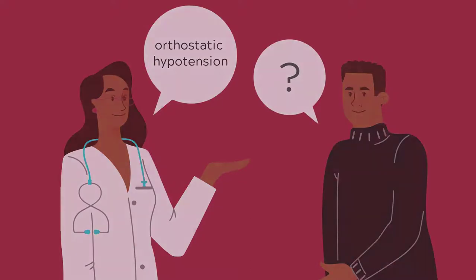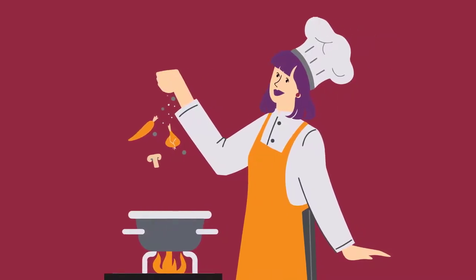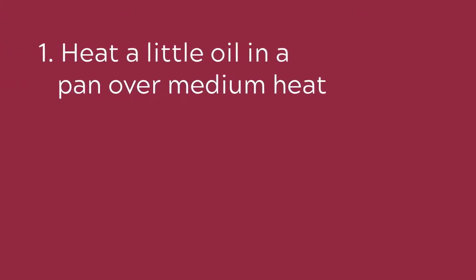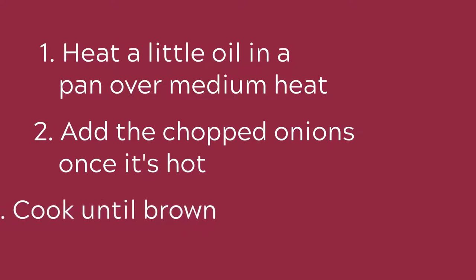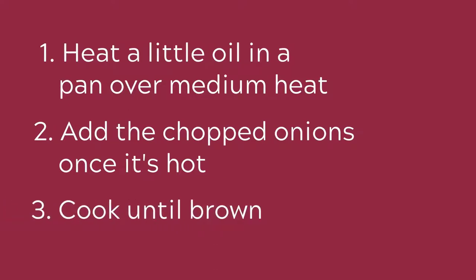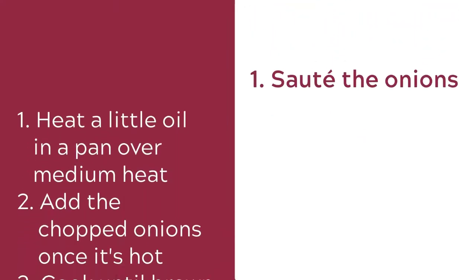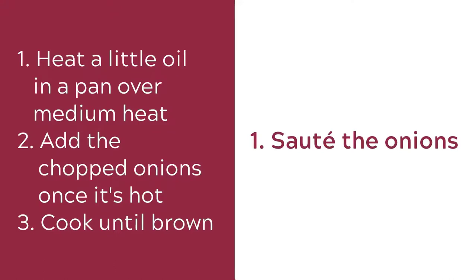So why does jargon exist in the first place? Let's use a cooking example to illustrate how it works. 'Sauté the onions' is another way of saying: heat a little oil in a pan over medium heat, add the chopped onions once it's hot, and cook until brown. But it's easier and quicker to say 'sauté' than to describe the whole process in every recipe. It's also easier to memorize this process when you have a single specialized word for it.